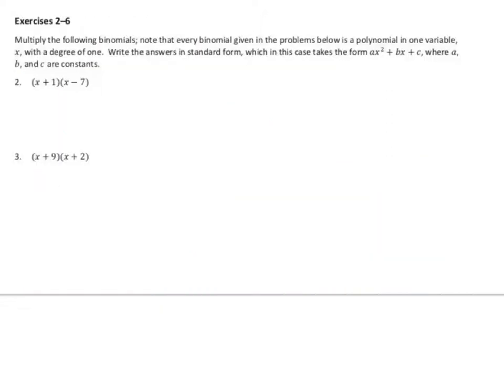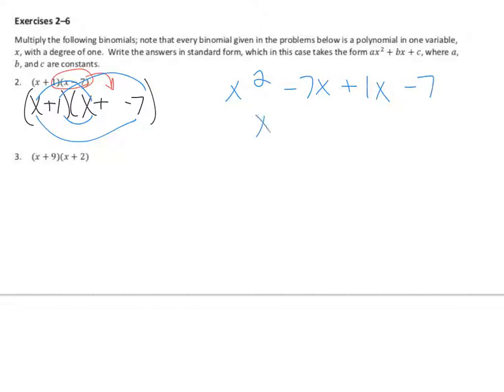Let's multiply the following binomials. Note that every binomial given in the problems below is a polynomial in one variable, x with a degree of 1. What we just talked about is this example, x plus a negative 7. Every time I look at problems like this, I almost instantly remember that. But since you guys are still practicing, we just need to remember that this binomial actually is x plus a negative 7. So when we FOIL, first is x squared, outer is negative 7x, inner is x, and last is negative 7. Now we collect those middle terms and we get x squared minus 6x minus 7 as our answer. And this is our form that we're looking for.